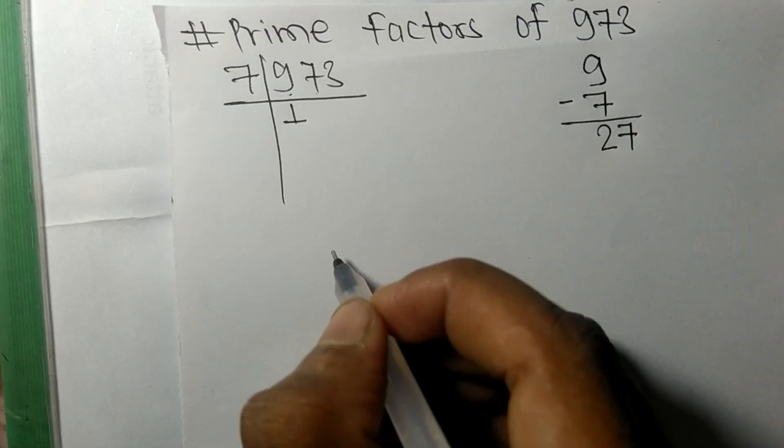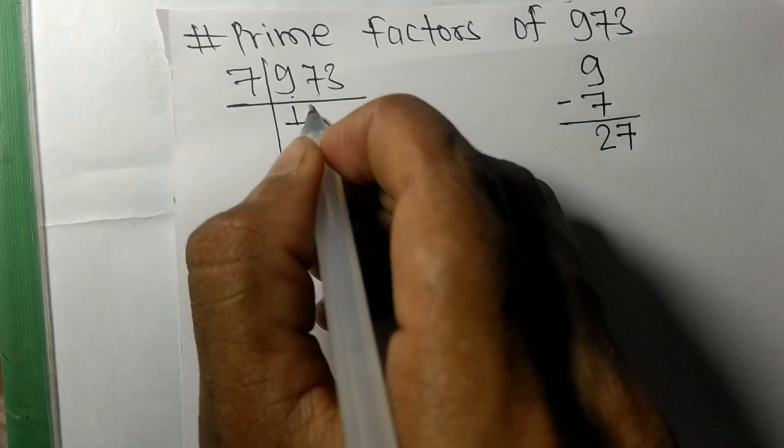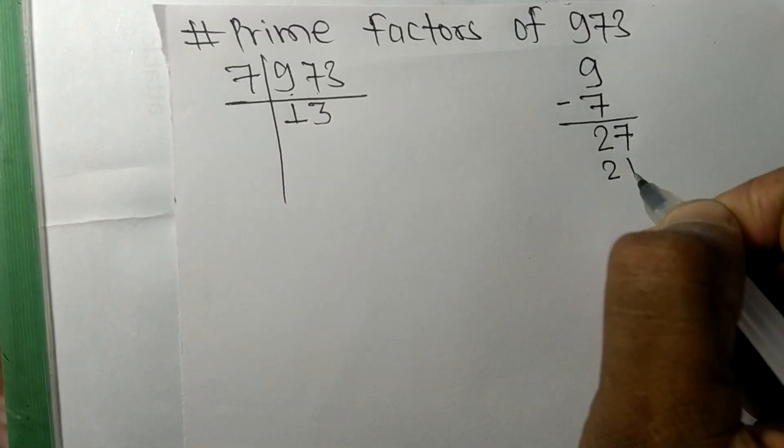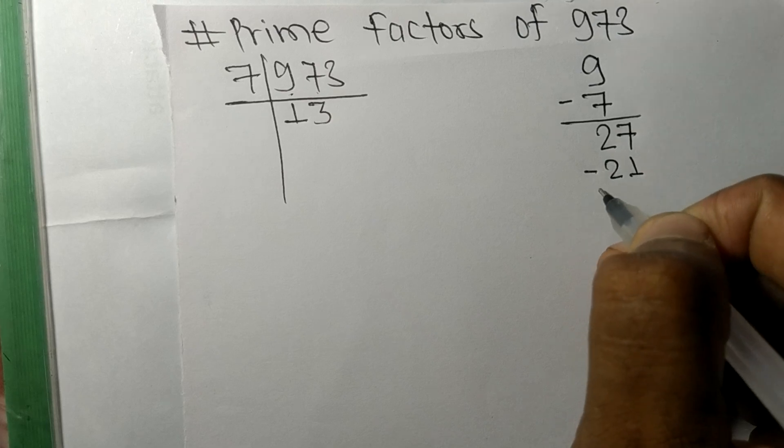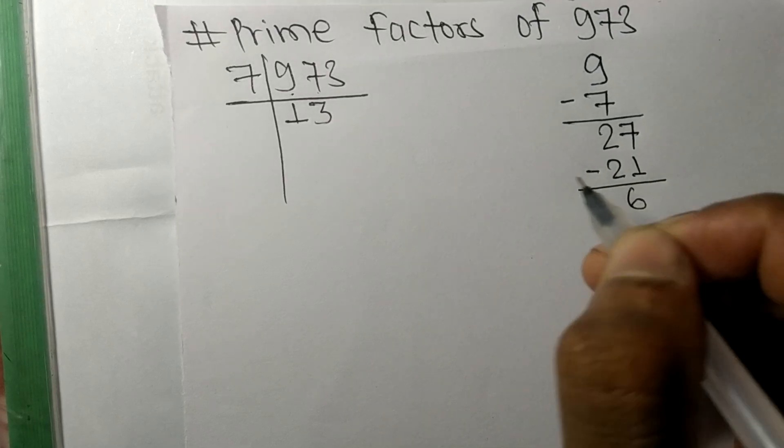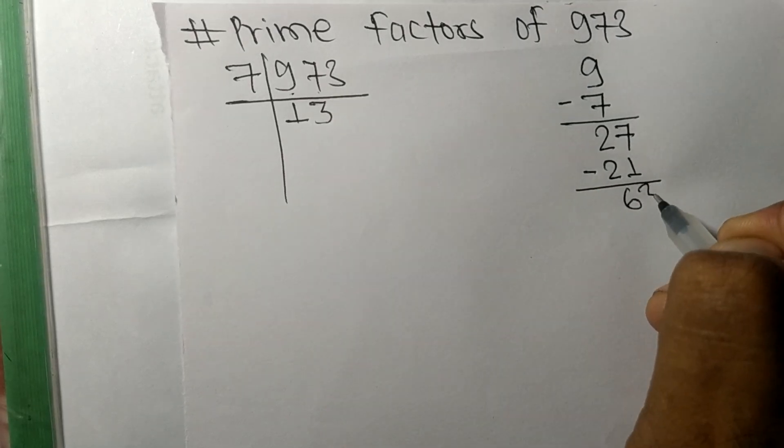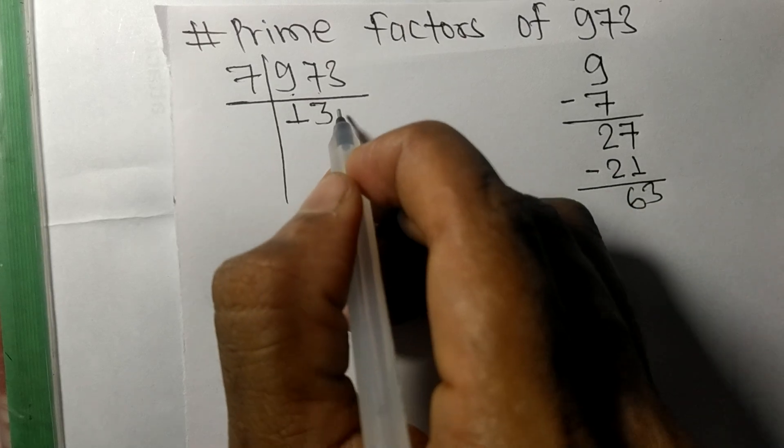So 7 times 3 means 21. On subtracting we get 6 and this becomes 63. So 7 times 9 means 63.